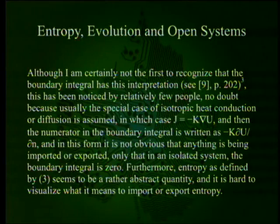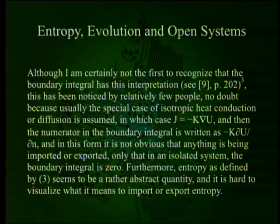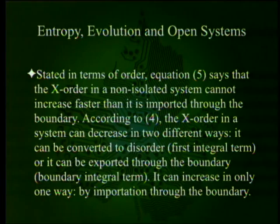No doubt because usually the special case of isotropic heat conduction or diffusion is assumed, in which case j equals minus k del u, and then the numerator in the boundary condition is written as k times partial u over partial n. In this form, it is not obvious that anything is being exported or imported, only that in an isolated system the boundary integral is zero. Furthermore, entropy as defined by equation 3 seems to be a rather abstract quantity, and it is hard to visualize what it means to import or export energy. Stated in terms of order, equation 5 says that the x-order in a non-isolated system cannot increase faster than it is imported through the boundary. The x-order in a system can decrease in two different ways: it can be converted to disorder, or it can be exported through the boundary. It can increase in only one way: by importation through the boundary.